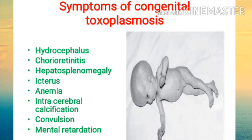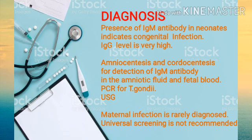Chorioretinitis, hepatosplenomegaly, and icterus are common features of all TORCH infections. However, characteristic features of congenital toxoplasmosis specifically are hydrocephalus and intracerebral calcification, and the child may be mentally retarded. Diagnosis of congenital toxoplasmosis is very important.